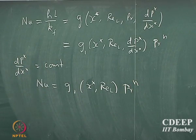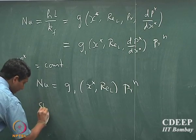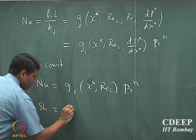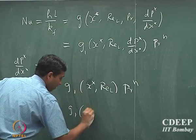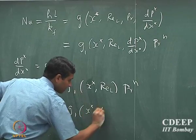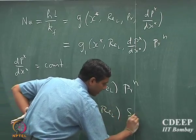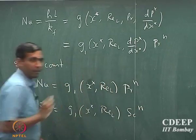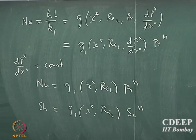Similarly, we could say that Sherwood number will have the same functional form — G1 of x-star multiplied by Schmidt number to the power of N. Any question?